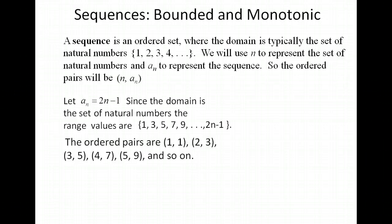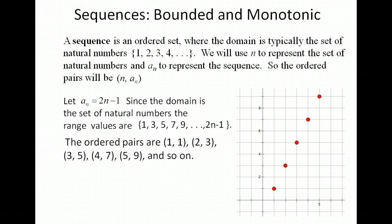Let's go ahead and graph these ordered pairs. What you should notice is that they form a straight line, but we don't connect them with a line because this is a discrete set of numbers for our input values — there's nothing between 1 and 2, so you just draw the dots. Following the path, you can see that the output values are going to continue to increase.